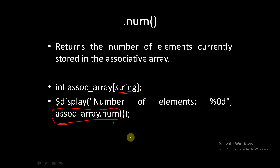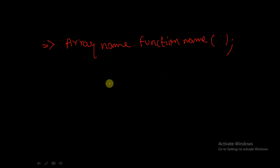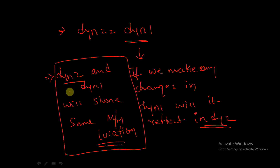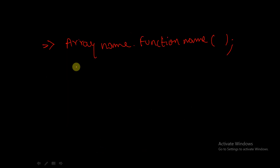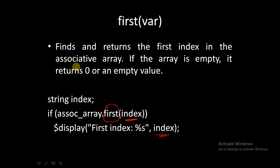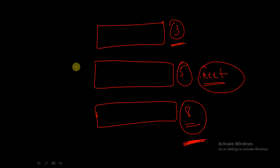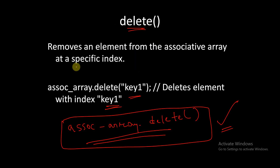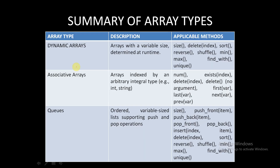These are the built-in methods available in associative arrays. We will also understand them through coding. This concludes the theory portion for packed arrays, dynamic arrays, queues, and associative arrays, including all their built-in methods. In the next session, we will implement these functions through coding.